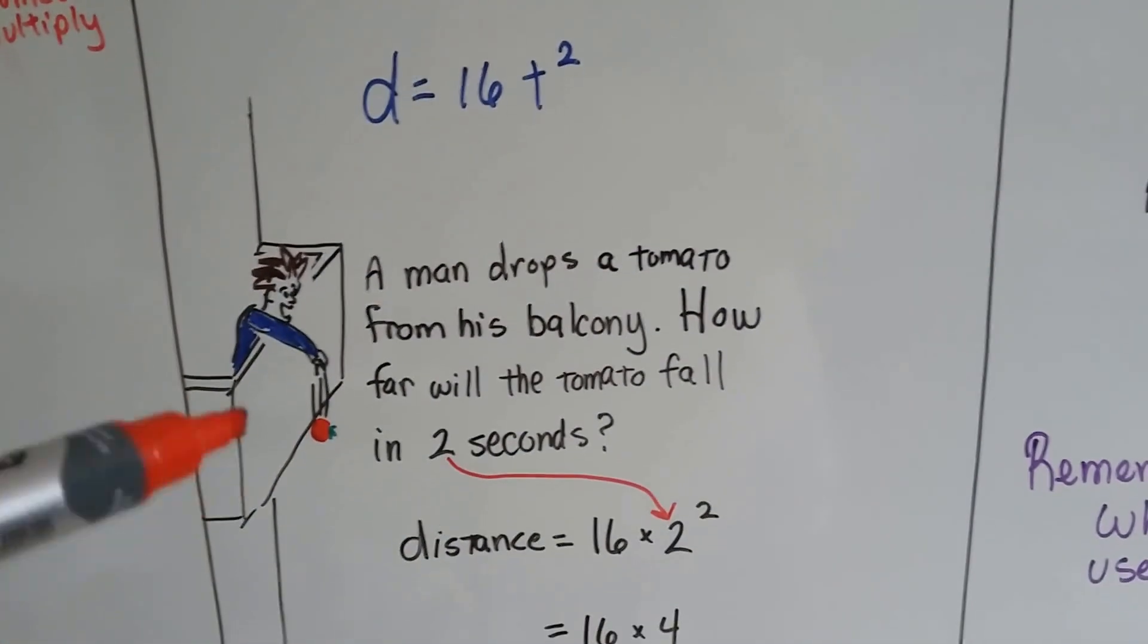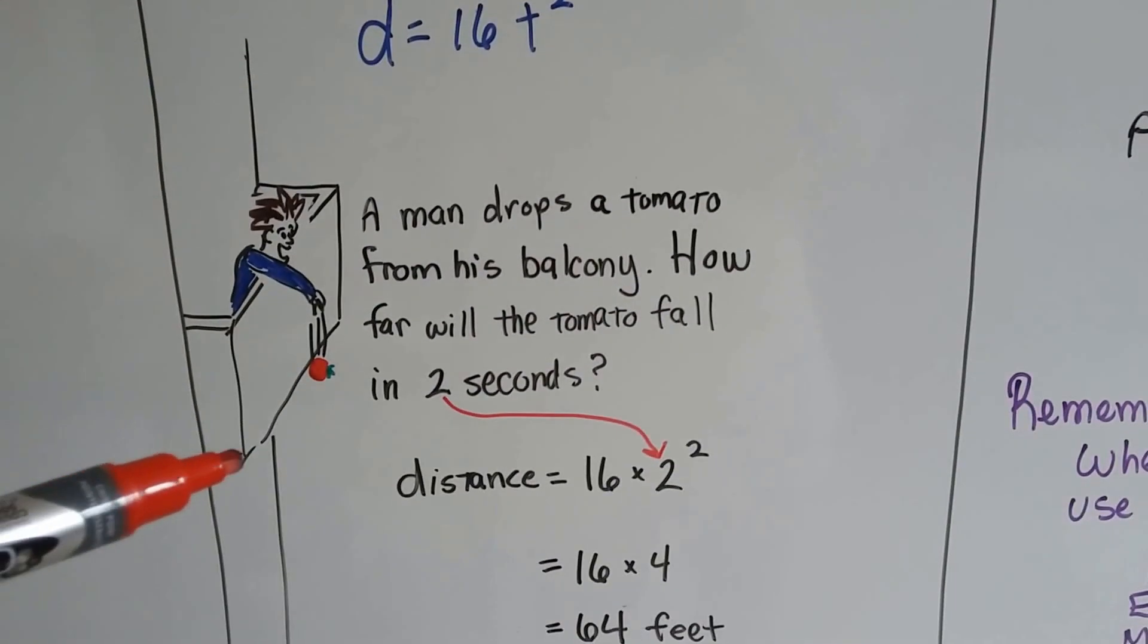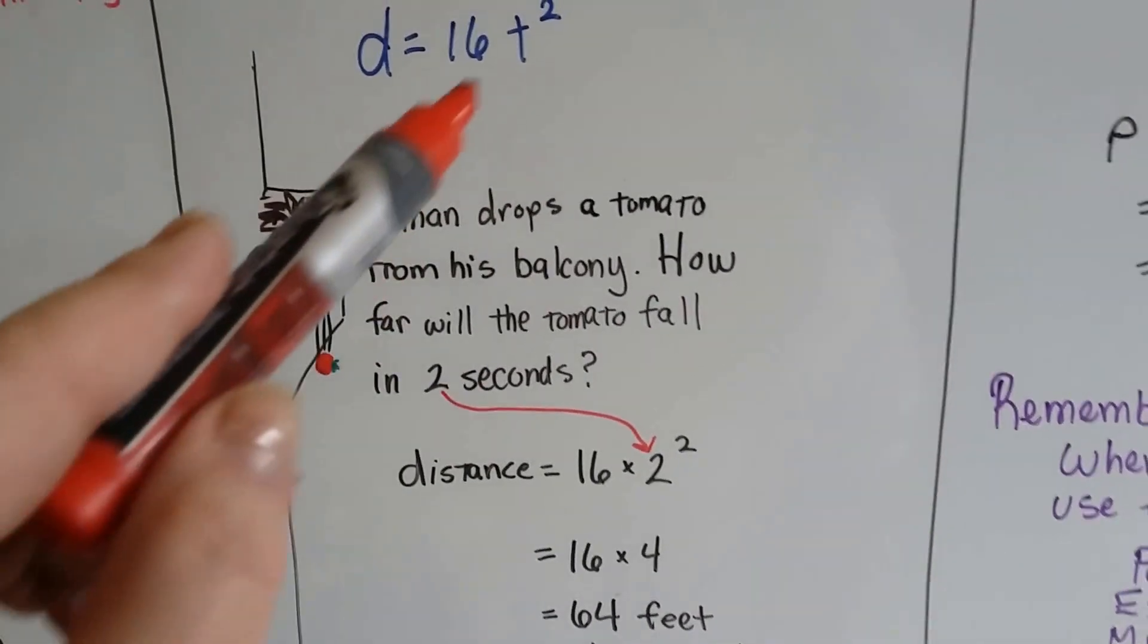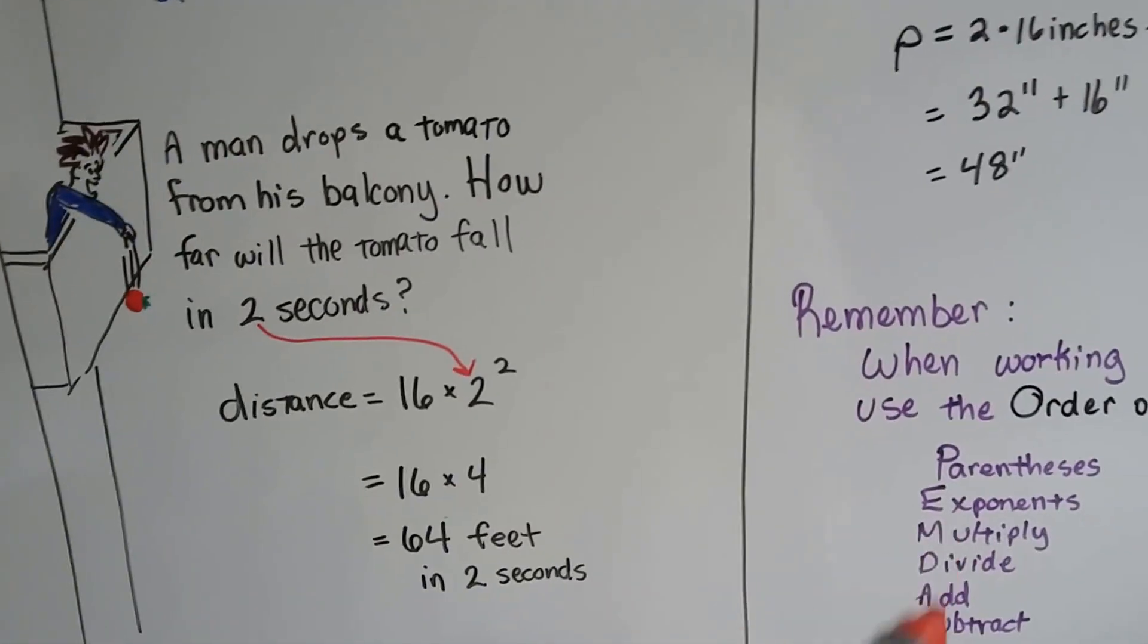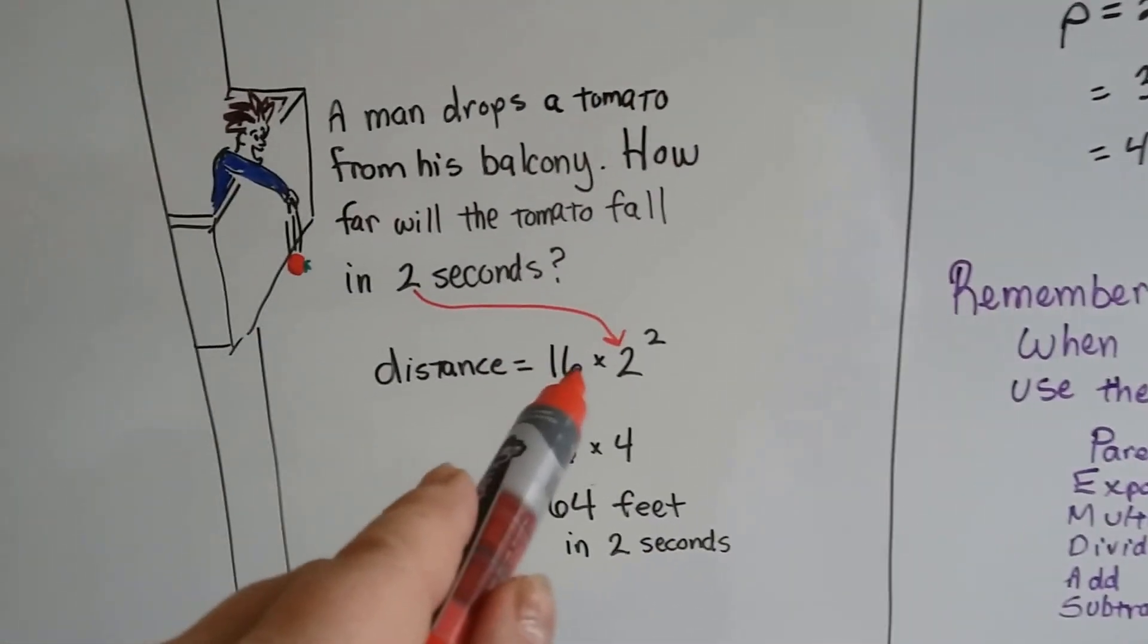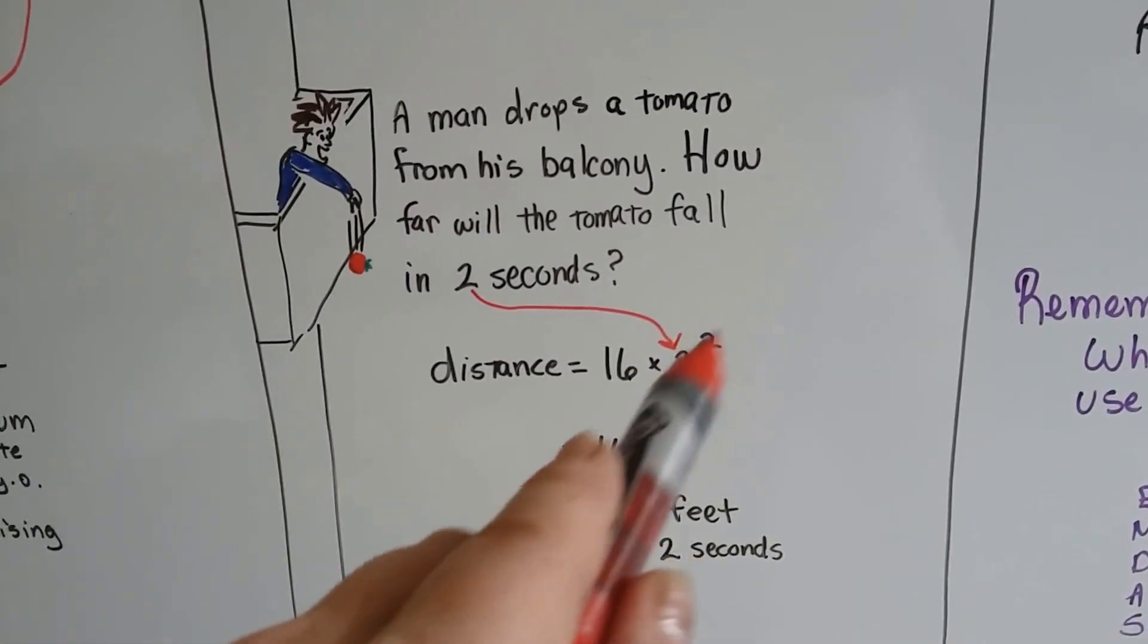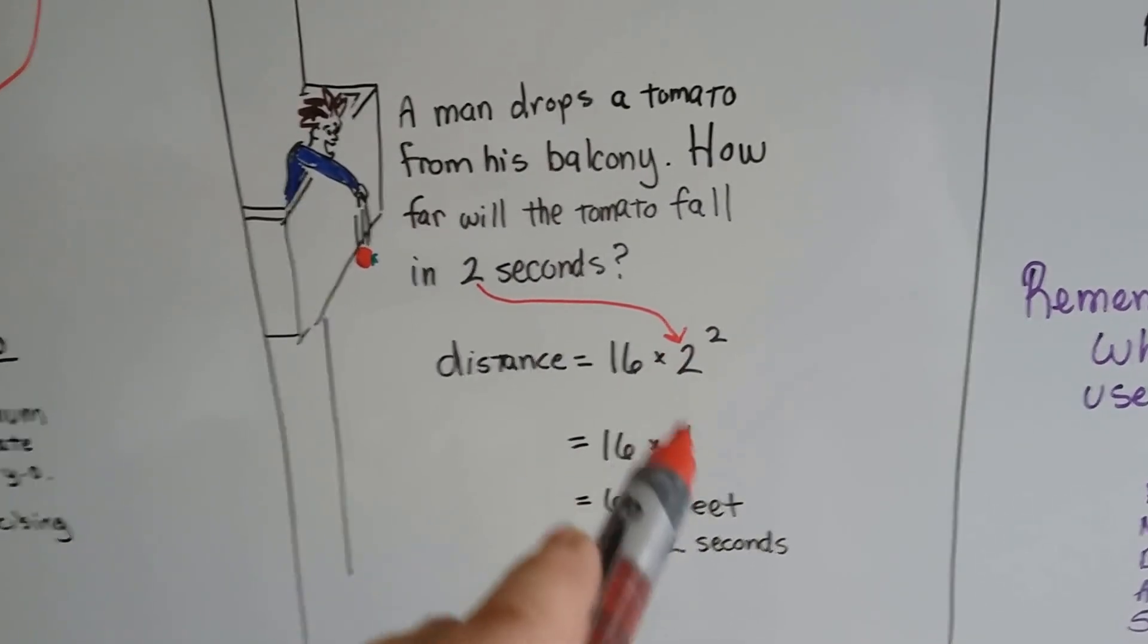So a man drops a tomato from his balcony, and we want to know how far that tomato is going to fall in 2 seconds. So we put a 2 where the t is, and we see that it's an exponent, and with the order of operations, exponents are going to be done before anything else, before any multiplication. So 2 times 2 is 4. So now that's done, that exponent's done.